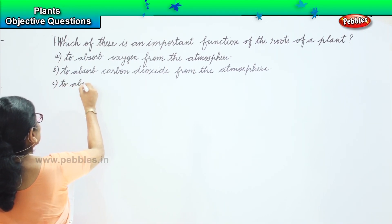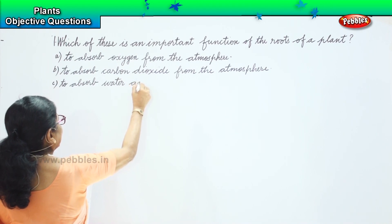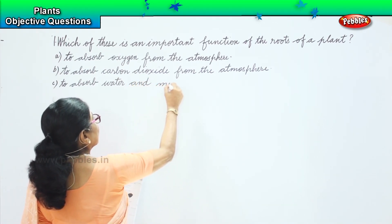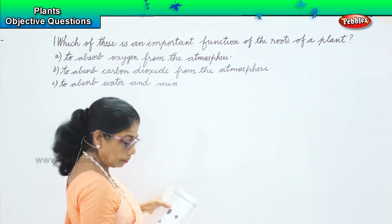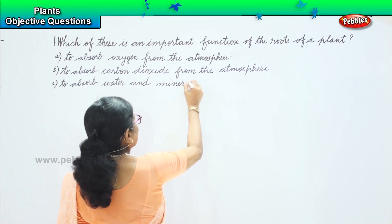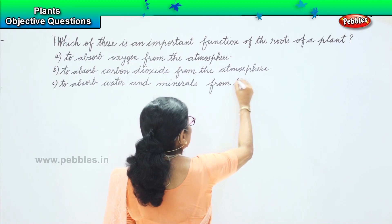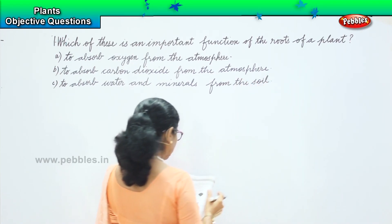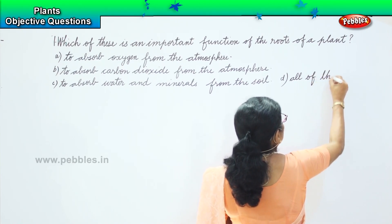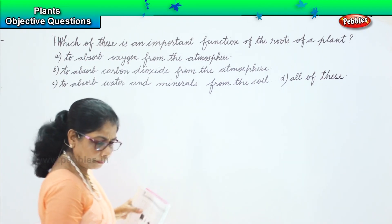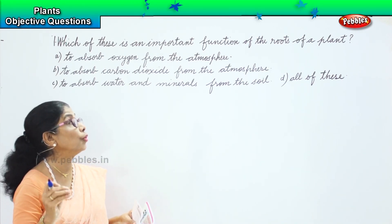The third option is to absorb water and minerals from the soil. And option D: all of these. So choose from the four options — which of these is an important function of the root of a plant?